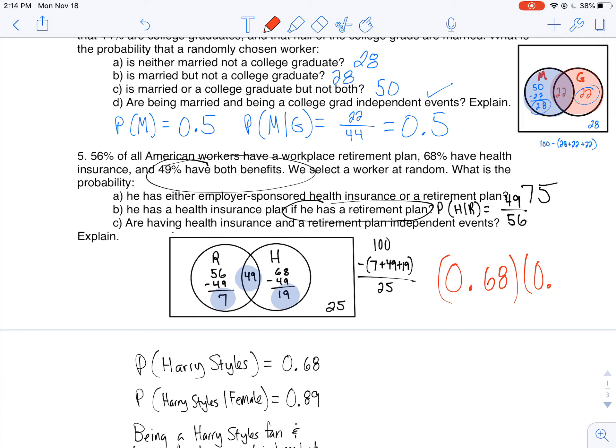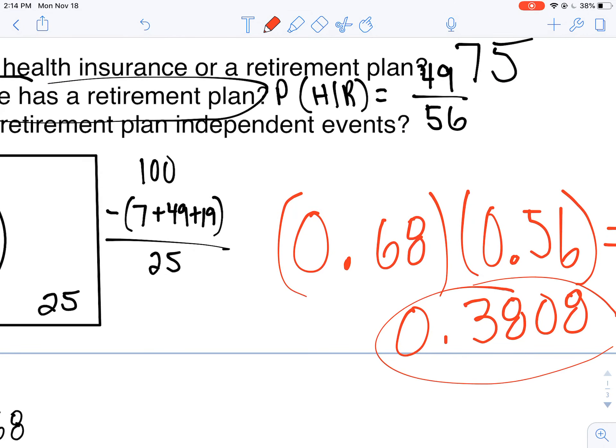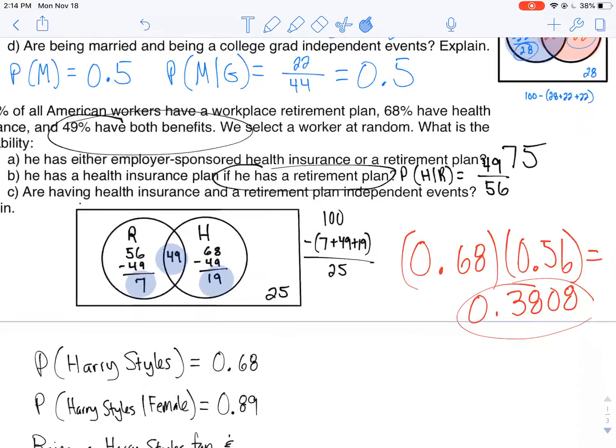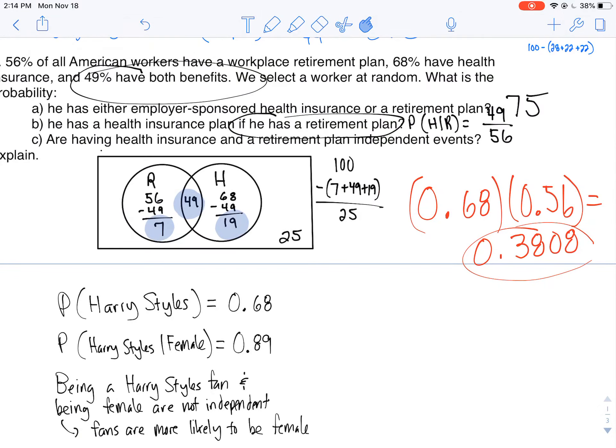Probability of having retirement is 56%. Probability of having health insurance is 68%. I multiply these: 0.68 times 0.56, I get about 38%, 0.3808. If these are independent events, I'm gonna be finding this number right at my intersection. Am I though? Nope. I'm getting 49. So immediately I can say they aren't independent.